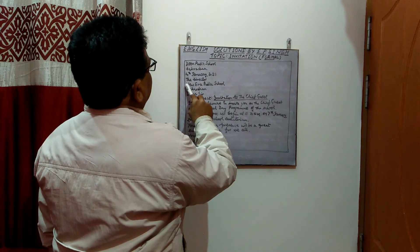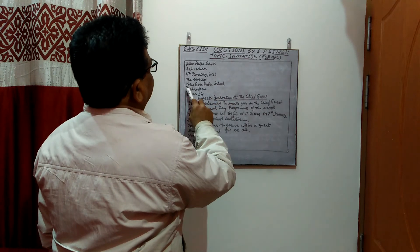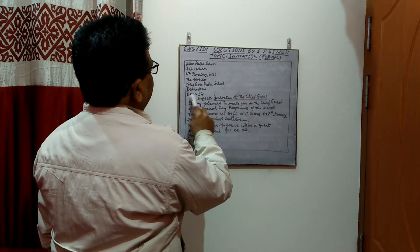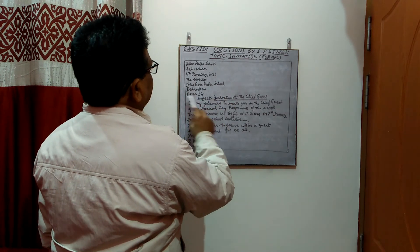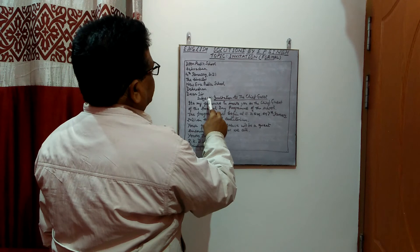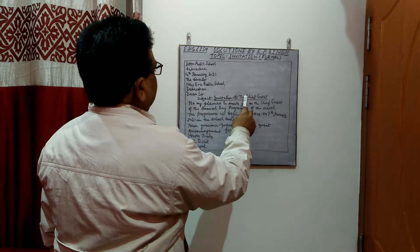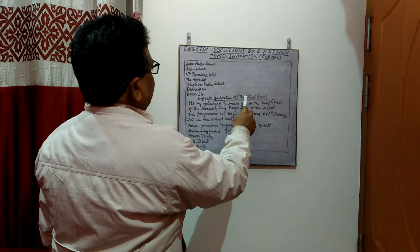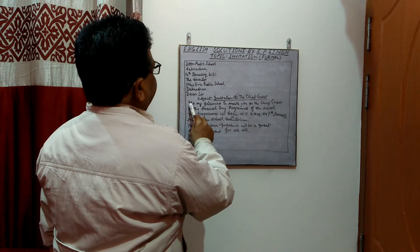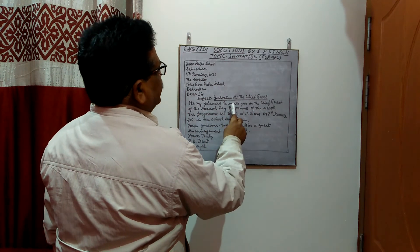Then the name and address of the recipient — the Director, New Era Public School. Then the salutation: 'Dear Sir.' Then in the subject line, it is written: 'Invitation as the Chief Guest.' Then the content will come.